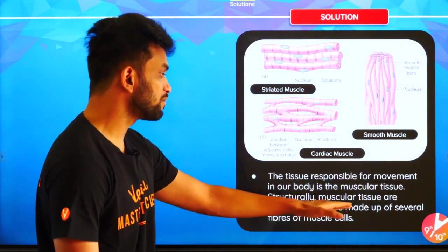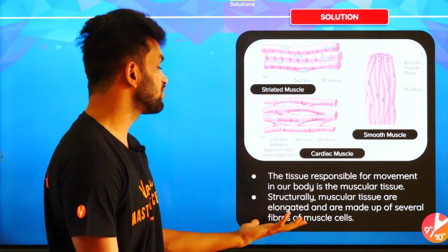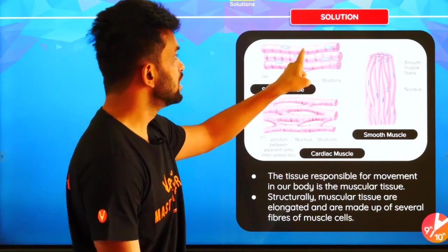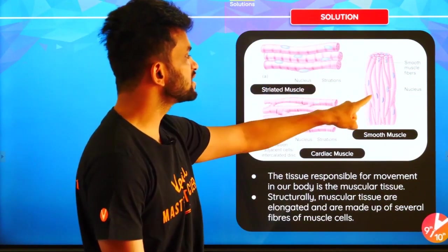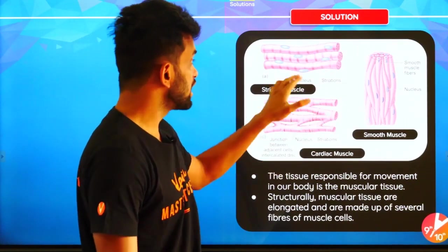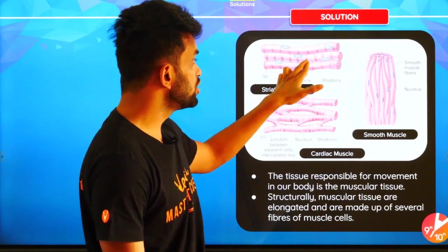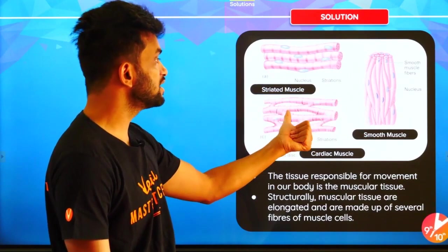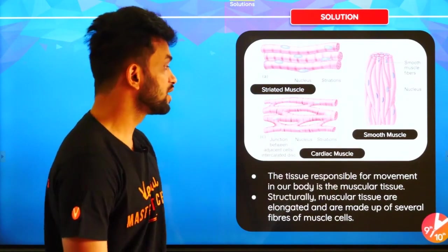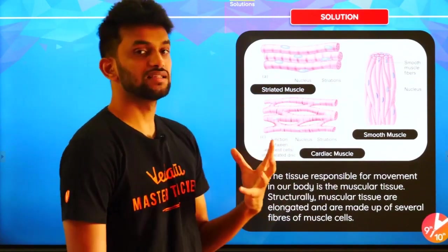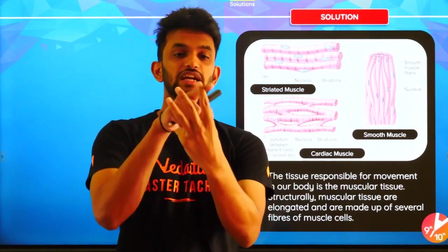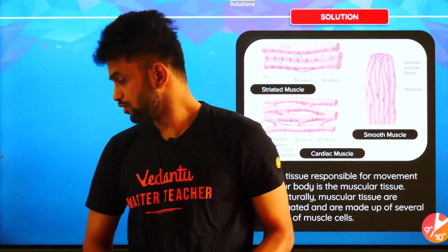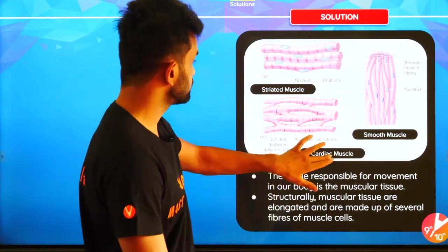Structurally, muscular tissues are elongated and are made up of several muscle fibers. You can draw the diagram — this is cylindrical, spindle-shaped, or branched. They can be multi-nucleated or uninucleated, but all of them are nucleated. Muscles are of three types: striated, smooth, and cardiac muscle.